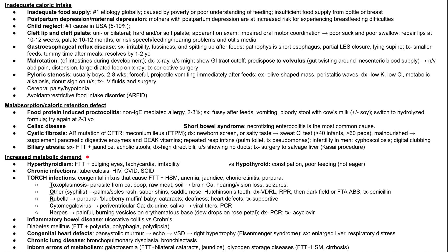The last category is increased metabolic demand. Hyperthyroidism can cause failure to thrive with bulging eyes, tachycardia, and irritability — similar to adults. Hypothyroidism can cause constipation and poor feeding; if the baby is sleeping all the time and not interested in food, it could be hypothyroidism. Chronic infections can also cause increased metabolic demand, including tuberculosis, HIV, common variable immunodeficiency, and severe combined immunodeficiency.